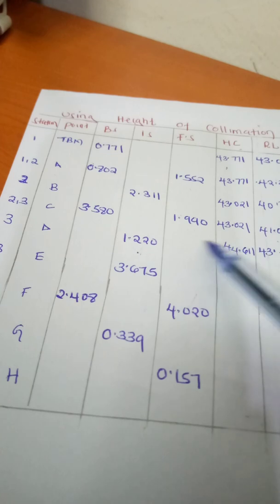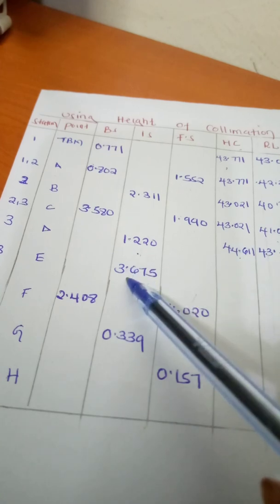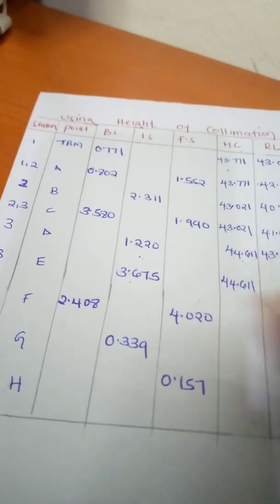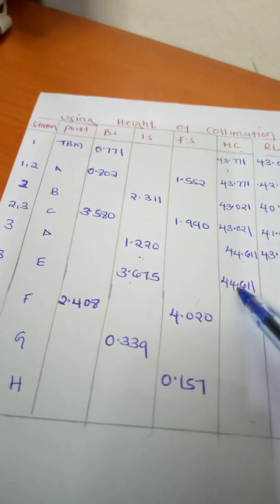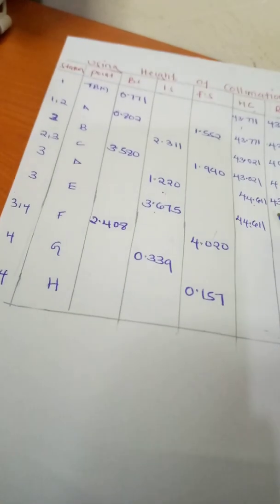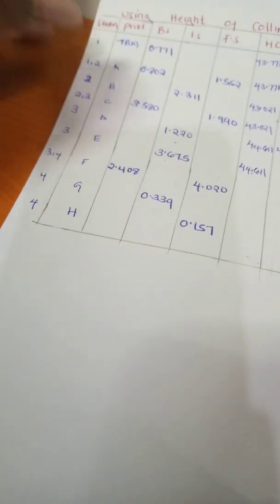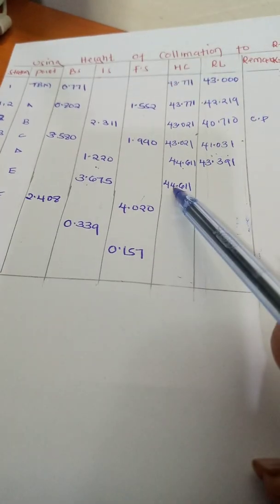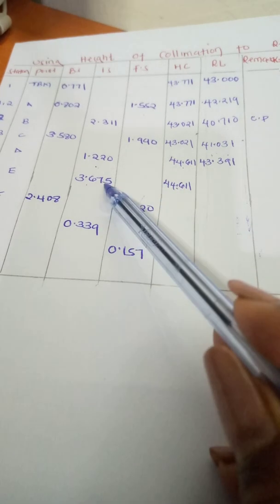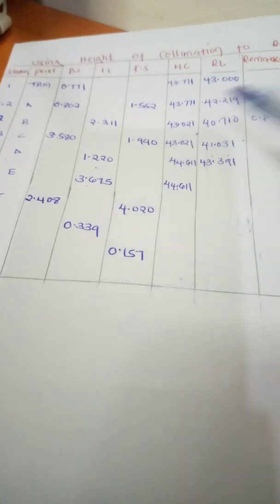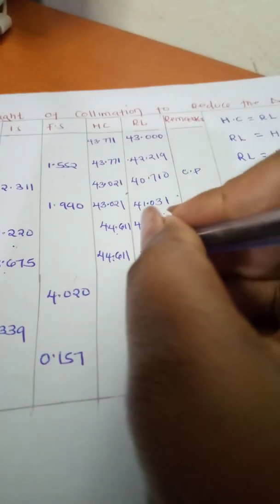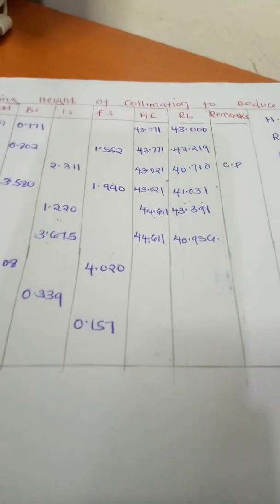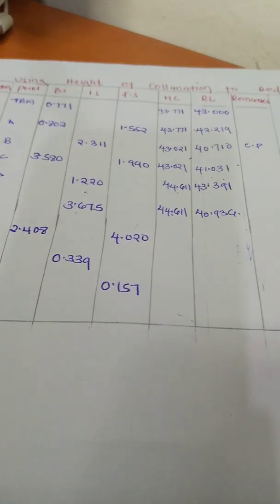Moving to point E, the height of collimation remains the same at 44.611. The reduced level changes — it will be 44.611 minus the intermediate sight, which gives us 40.936.